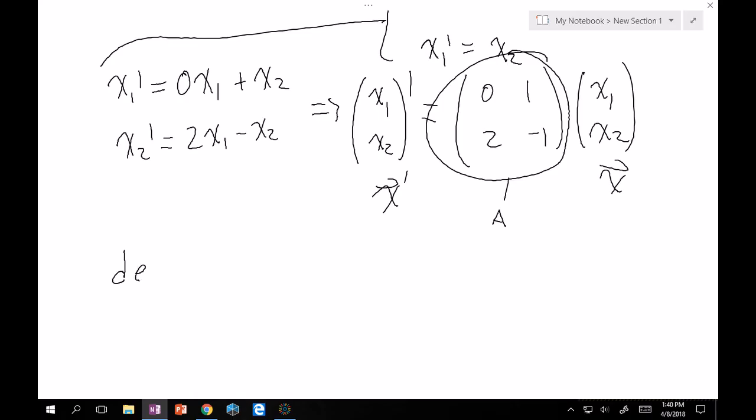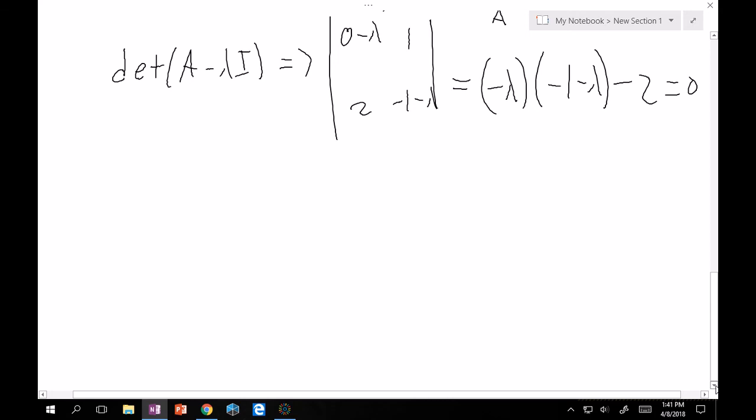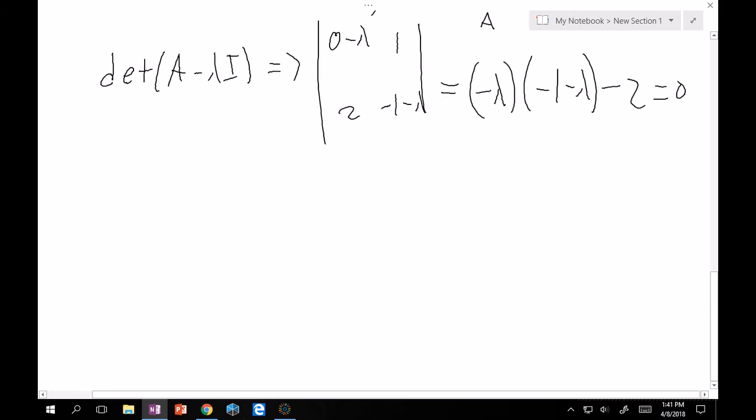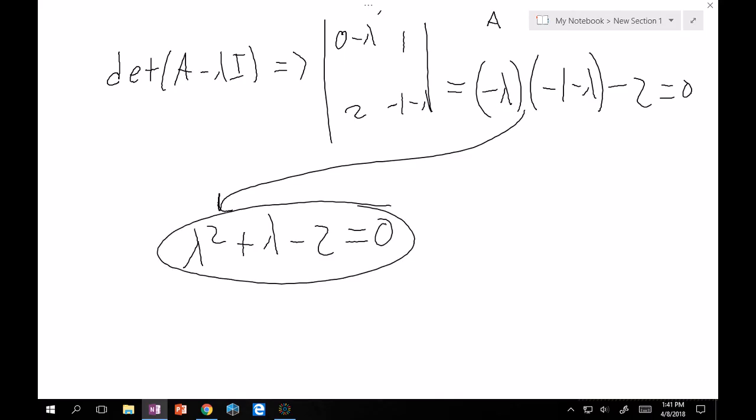So determinant of A minus lambda I is exactly... determinant of 0 minus lambda, 1, 2, minus 1 minus lambda. And then this yields minus lambda times minus 1 minus lambda minus 2 equals 0. And then, scrolling down a little bit further, this will give you lambda squared plus lambda minus 2 equals 0. And this is our characteristic equation, right?